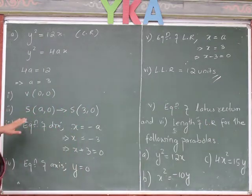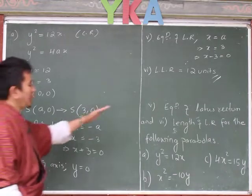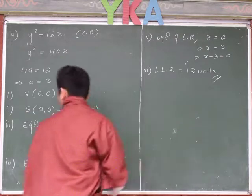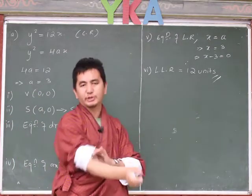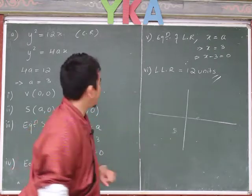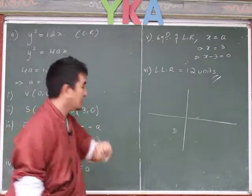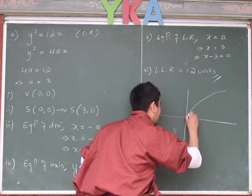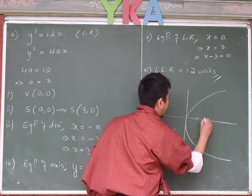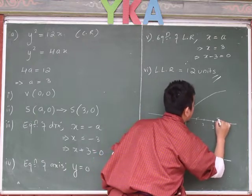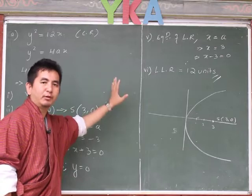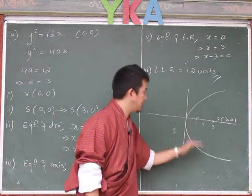So we have all the points: vertex, focus, equation of directrix, equation of axis, and we have calculated all. Now this is a simple calculation, but you really need to understand what you did and get the conclusion. This is a concave right parabola in standard form, so the vertex is always at the origin. Focus is at (3, 0) — meaning 3 units along the x-axis. Solving is easy, but you really need to understand the conclusion and get the picture of the graph.